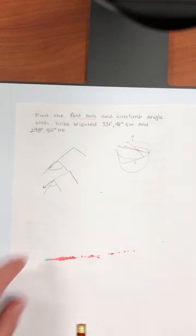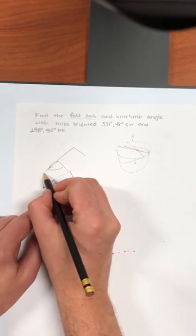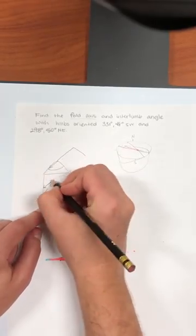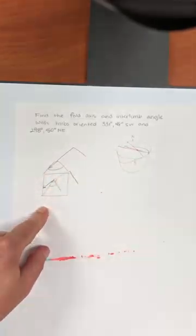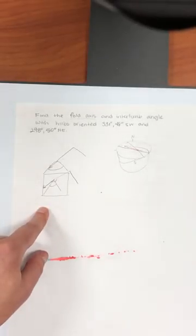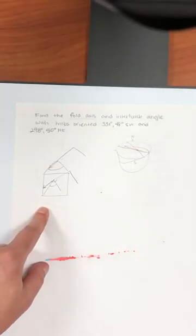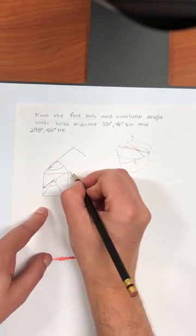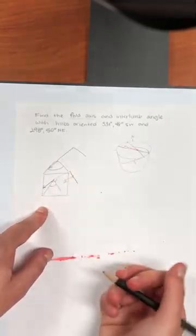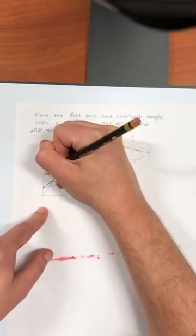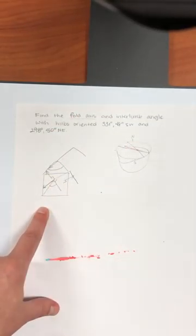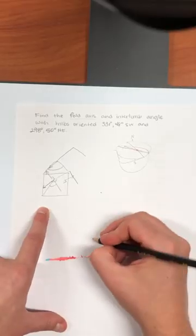The way that we can do this is we can define that plane. We want this plane to be perpendicular to the fold axis. We can also imagine other vectors that might be in that plane. So if we have a normal to this fold limb and a normal to this fold limb, those would be in that same viewing plane.